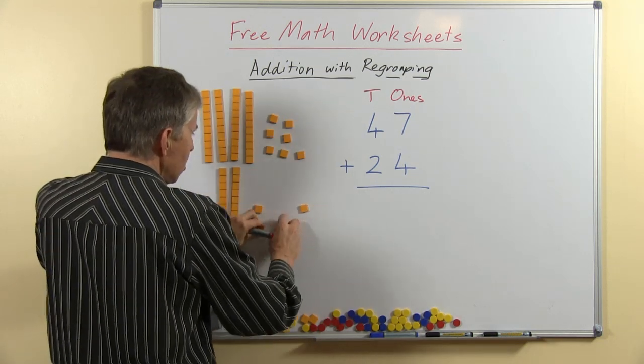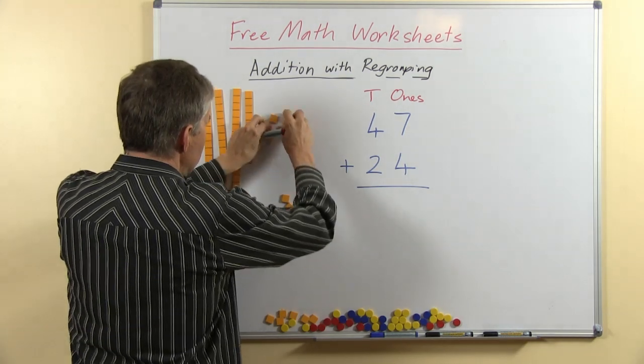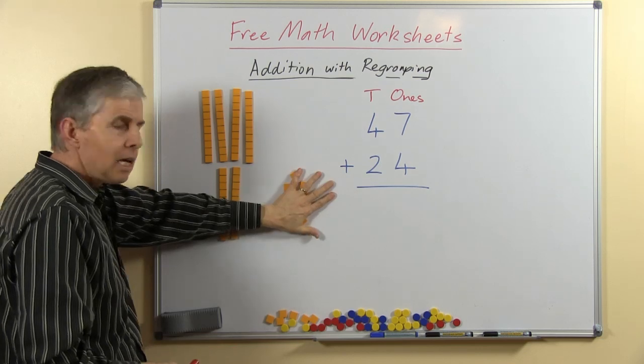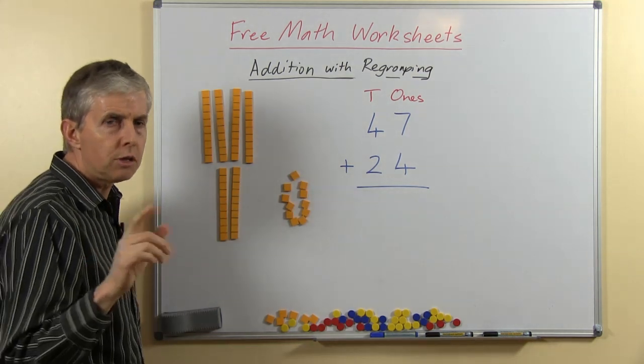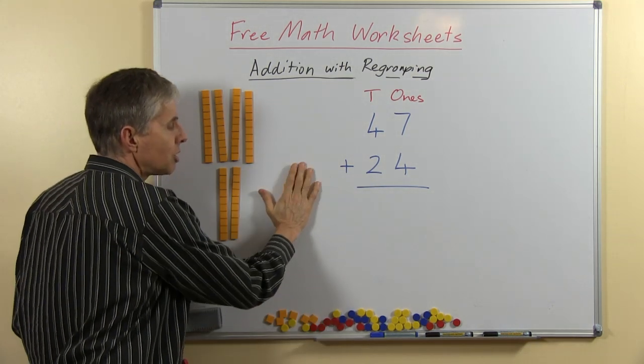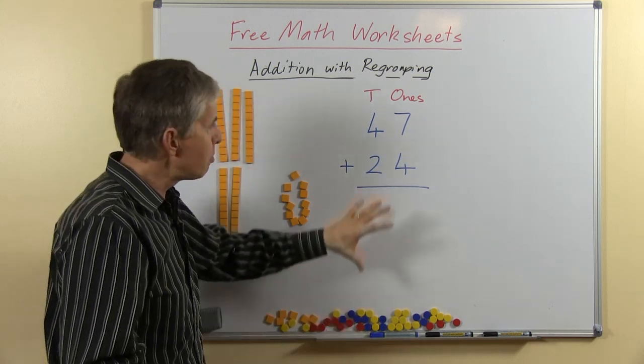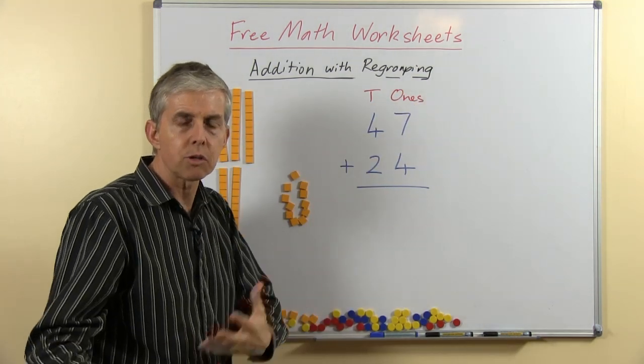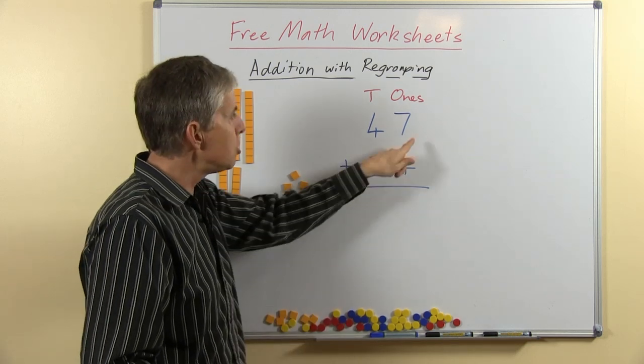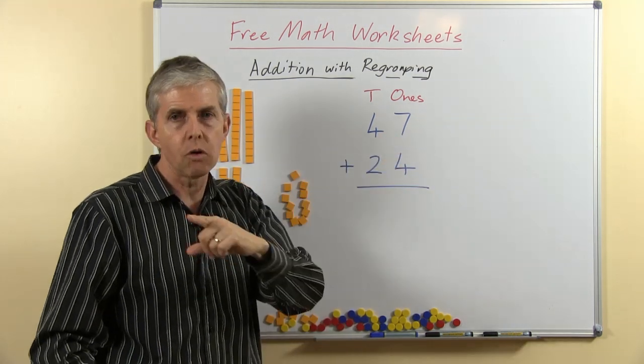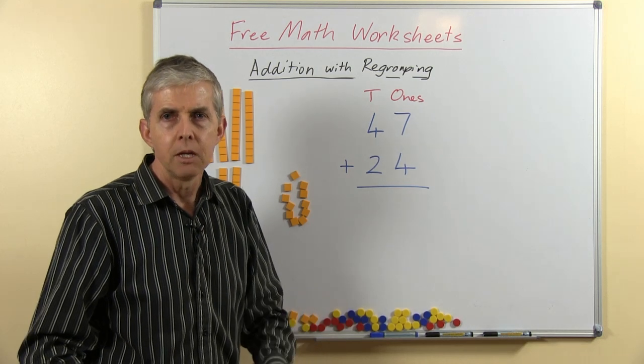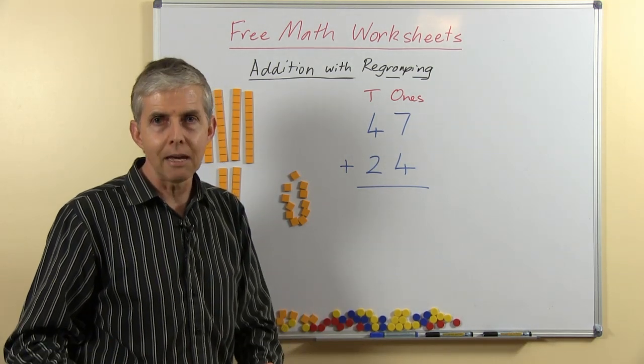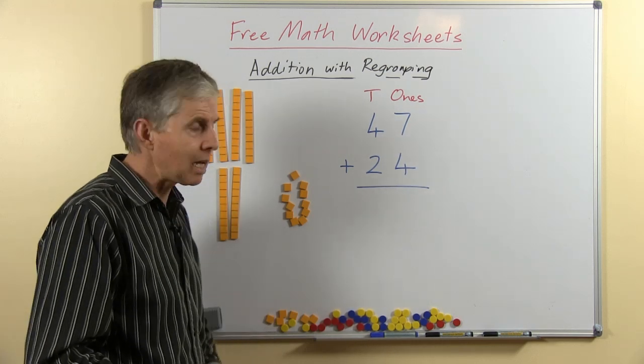So let's put all the ones together, there's 4 and 7 and we just push them all together like that. How many is that? Now if you're using base-10 blocks, I don't want you to count the blocks. It's important that you can do this without counting on your fingers or counting blocks or counters, but you think about your number facts. So 7 plus 4 is how much? You probably know 7 plus 3 is equal to 10, so 7 plus 4 is 11.